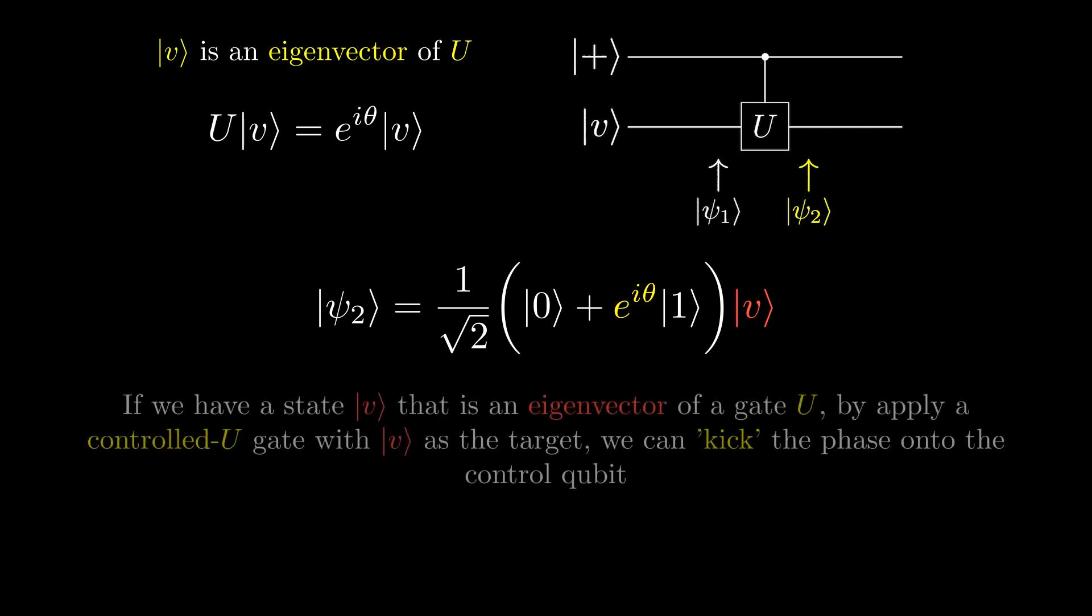This occurs if v is an eigenstate of the gate you are applying. We call this phenomenon phase kickback, and it is used in some quantum algorithms.